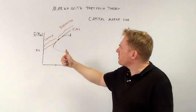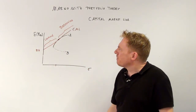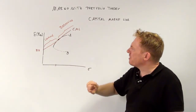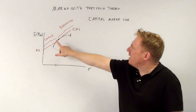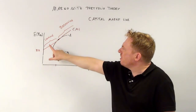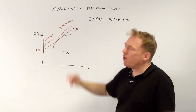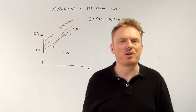So the first step is to compute this point of tangency, and then second, to decide on whether to lend or to borrow. Thank you for watching.